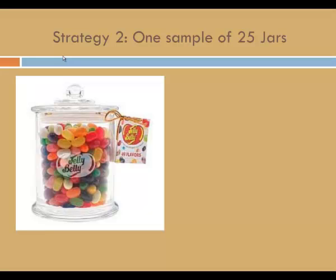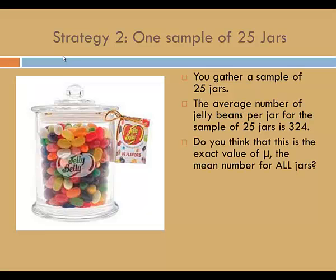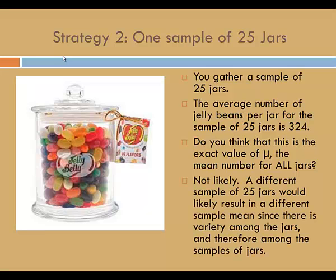Let's consider a second strategy: one sample of 25 jars. In this case, you gather a sample of 25 jars and find the average number of jelly beans per jar for the sample of 25 jars is 324. Do you think that this is the exact value of mu, the mean for all jars? Again, not likely. A different sample of 25 jars would likely result in a different sample mean, since there is variety among the jars, and therefore among the samples of jars.